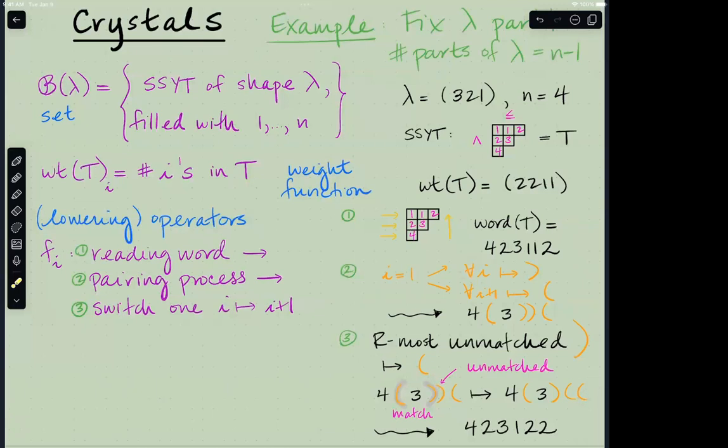So we need a weight function, and in this example the weight function just counts how many of each letter in the alphabet do you have. And so in this example here, this semi-standard Young tableau, the way that I filled it, I used two ones and I used two twos, and then I used one each of three and four. So that's the weight function in this case. All right, now the most complicated thing is to get your operators defined. And this usually comes in kind of a three-step process. So I'm sort of breaking down the definition of a lowering operator for you here in three parts. So one, I'll grab a reading word corresponding to a tableau.